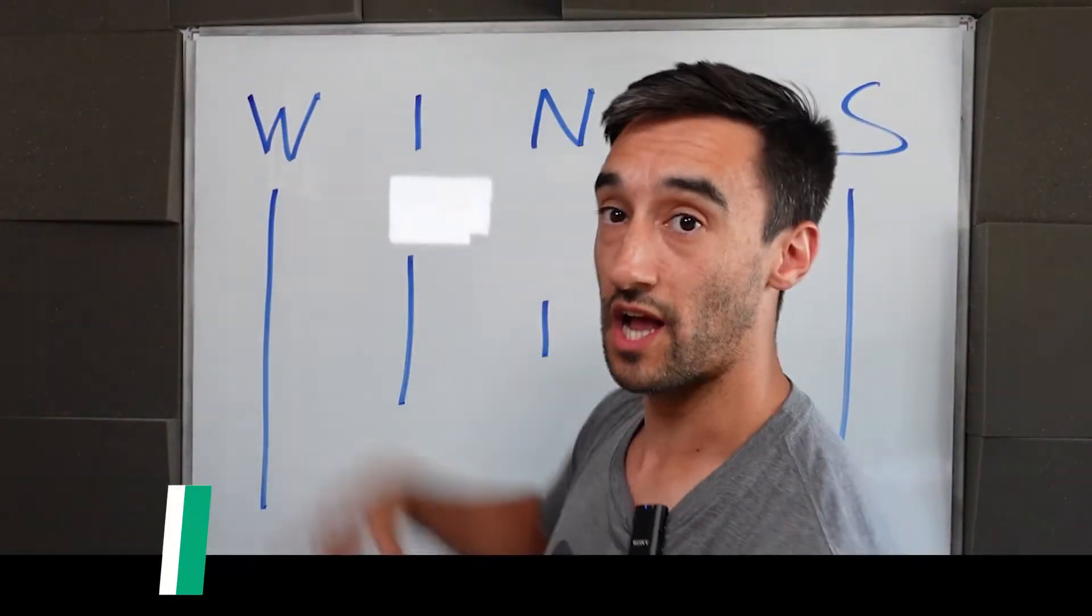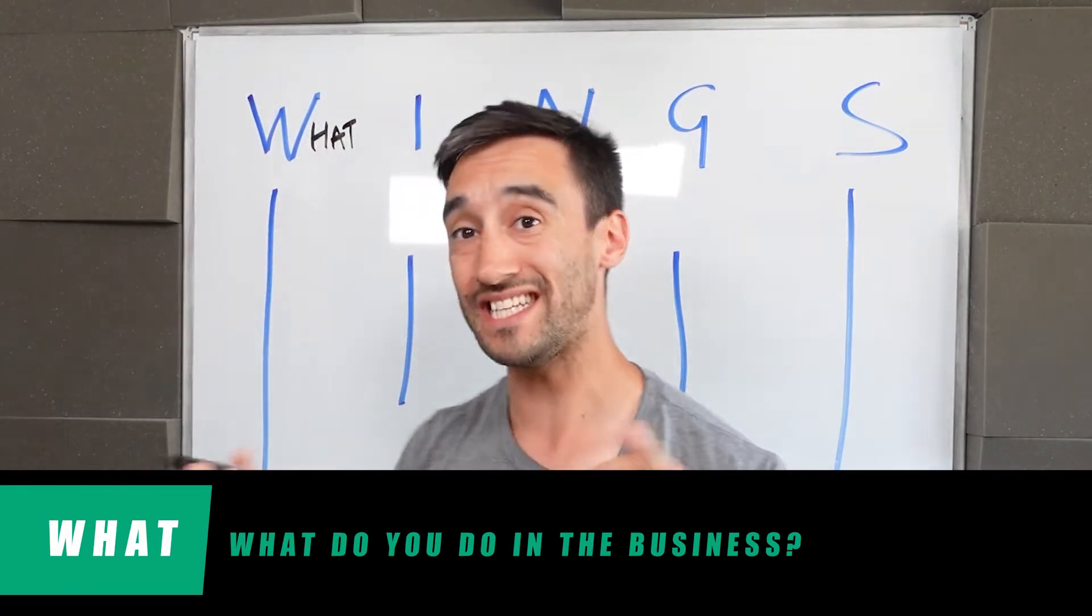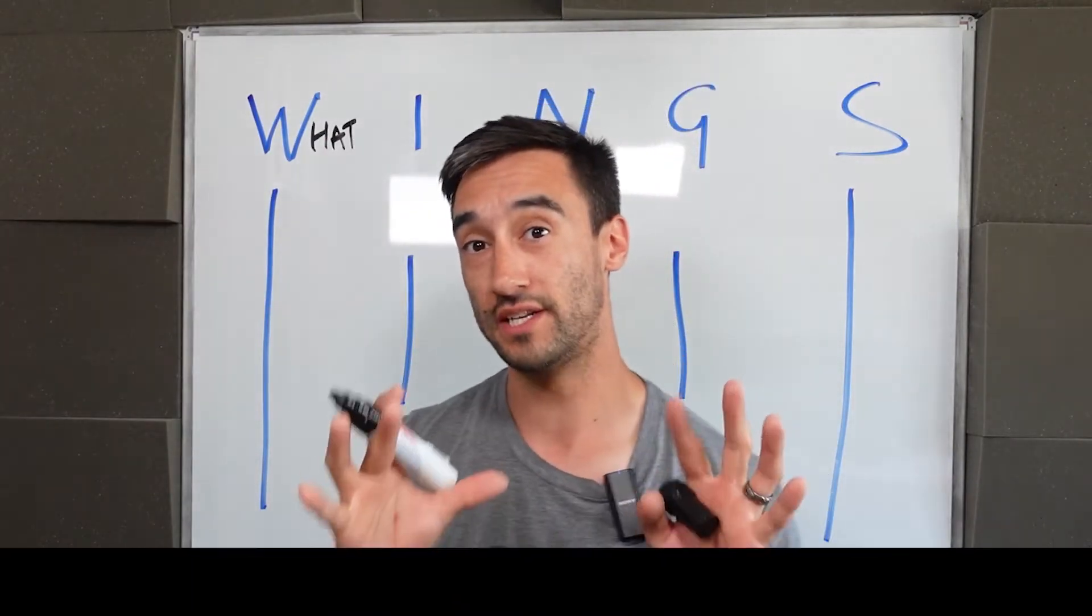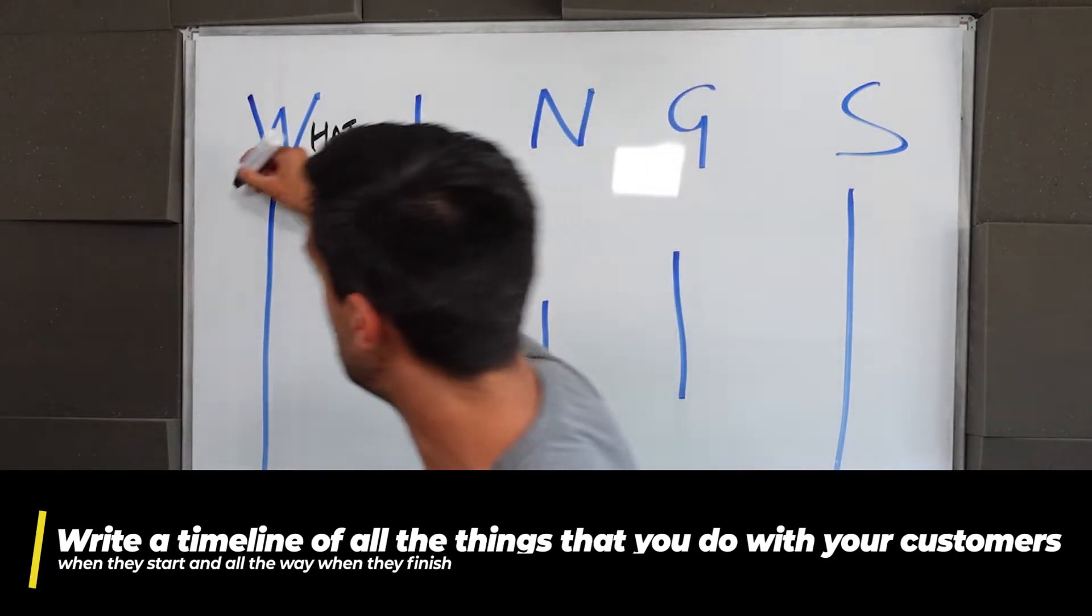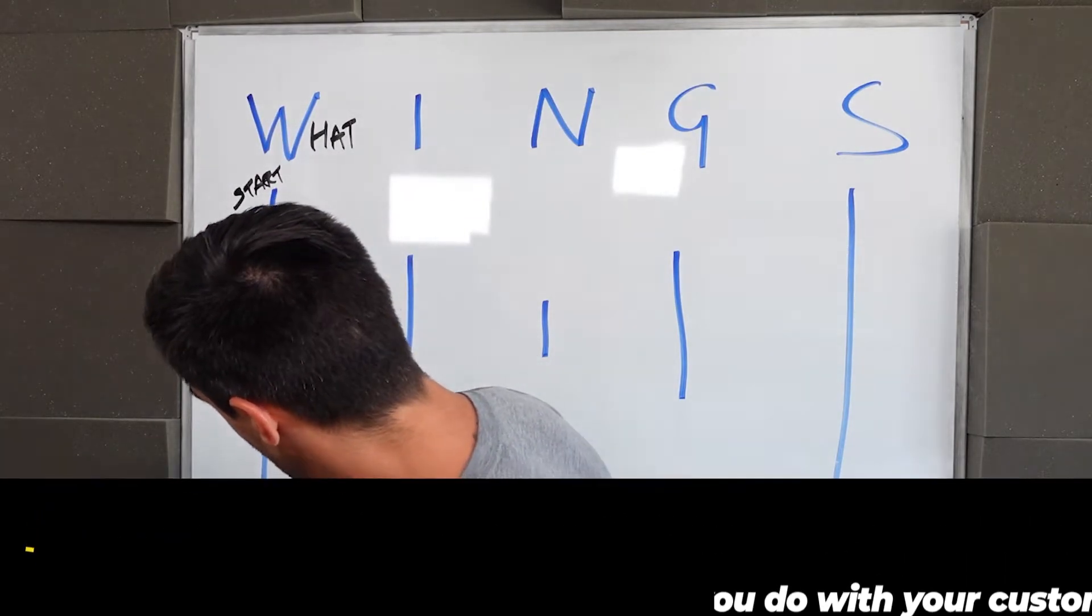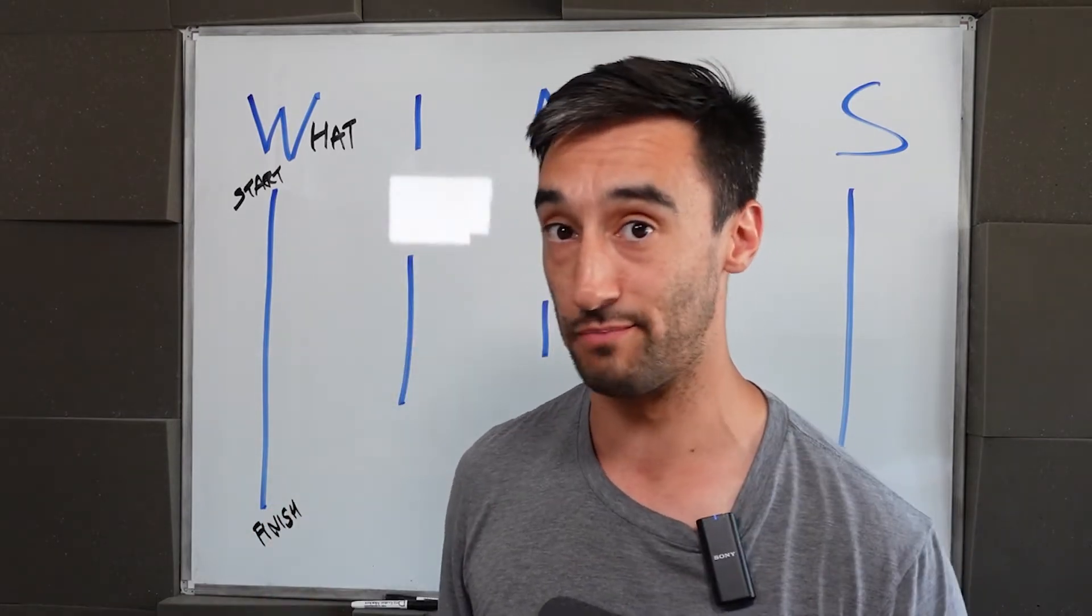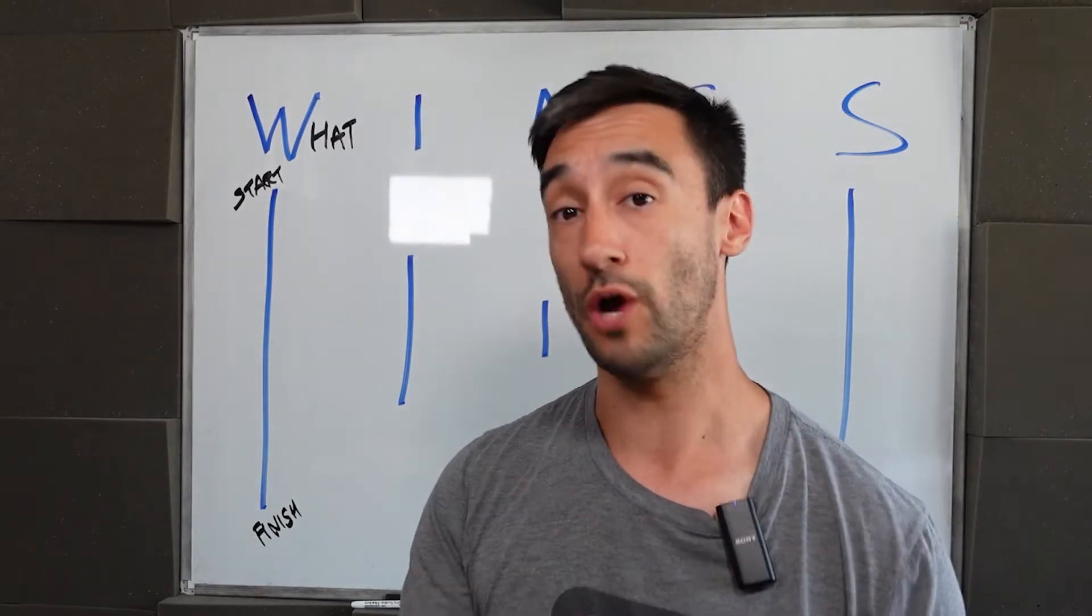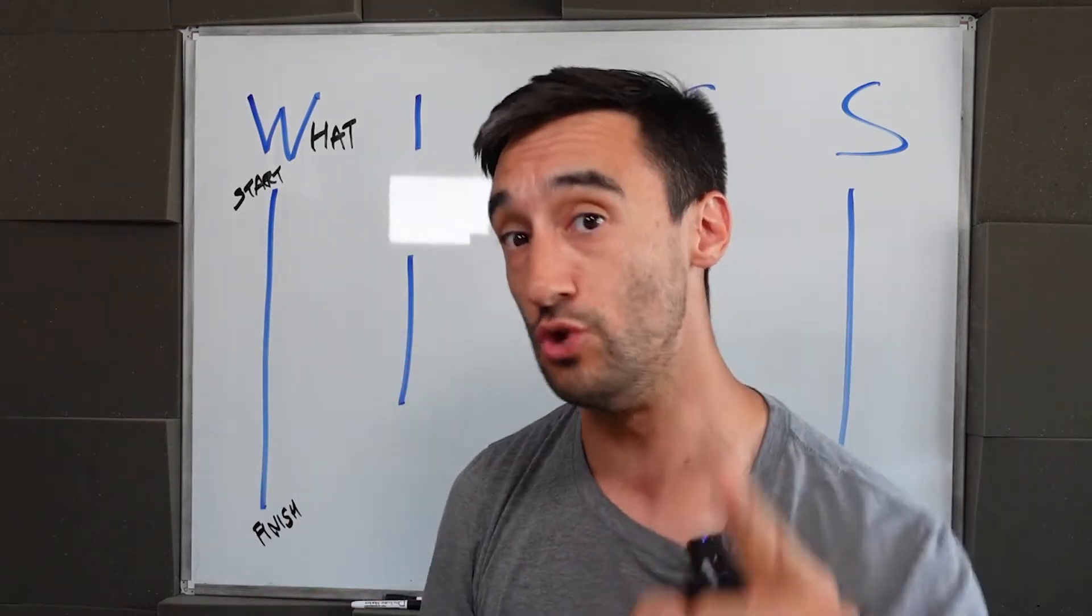The first piece that we're going to cover off is the W, and this stands for what. Basically, what is it that you do with your customers? Now along this line here, I want you to write a timeline of all the things that you do with your customers when they start all the way to when they finish. If you've done a few projects, I just want you to brain dump absolutely everything. It doesn't matter if you've done it once. It doesn't matter if it's something you think you want to do. Don't overthink it. I just want you to literally write out what it is that you do and what you deliver.